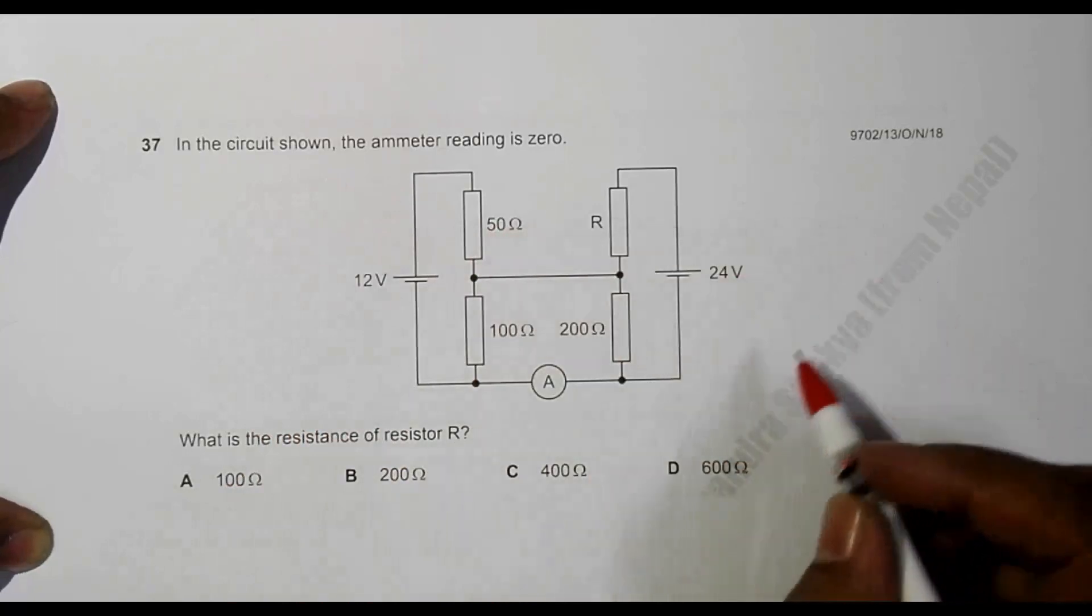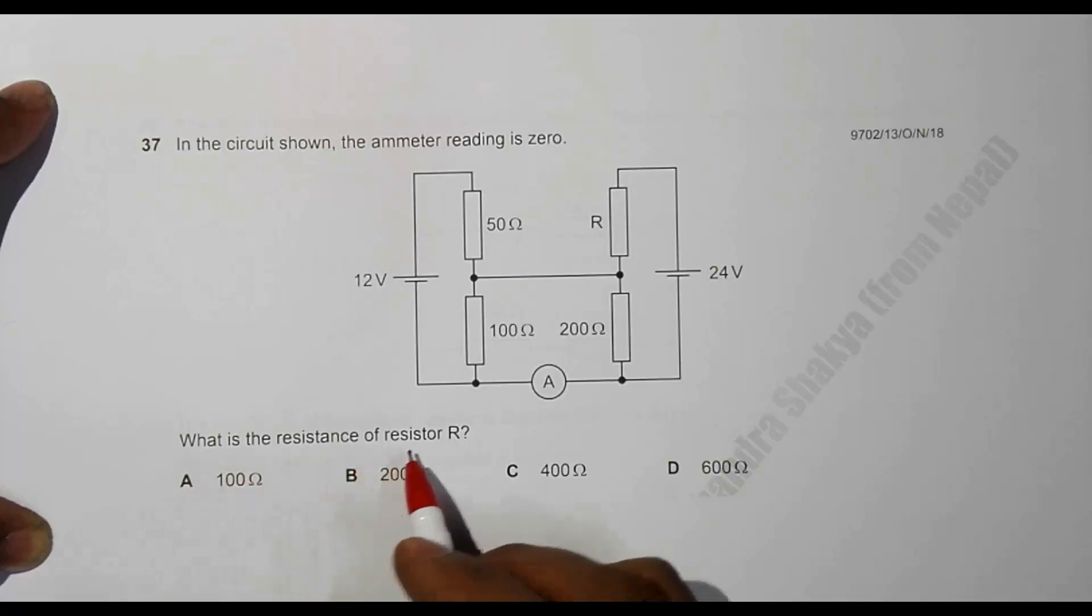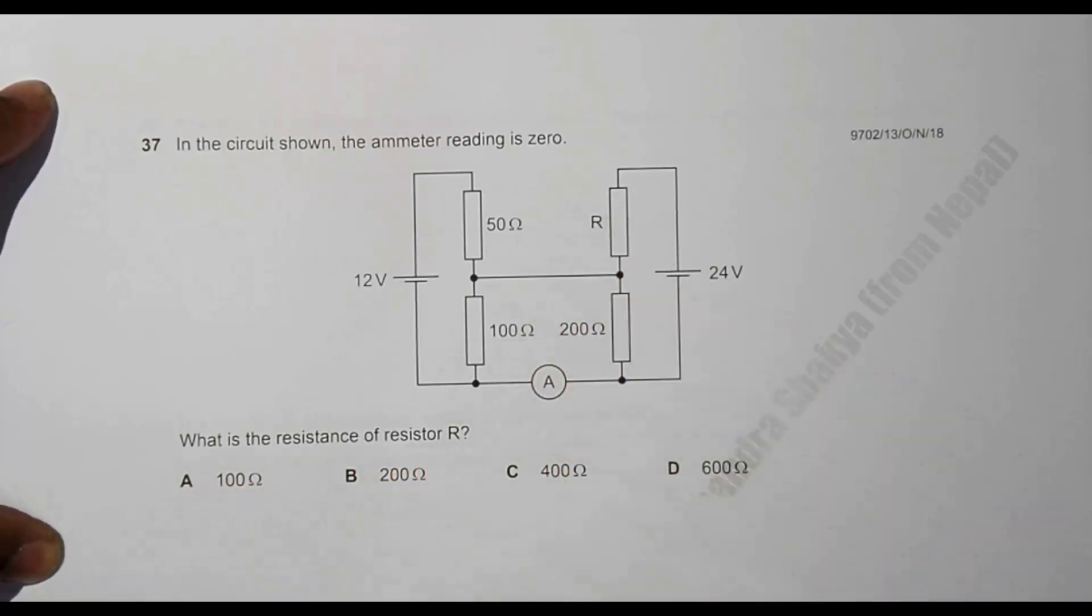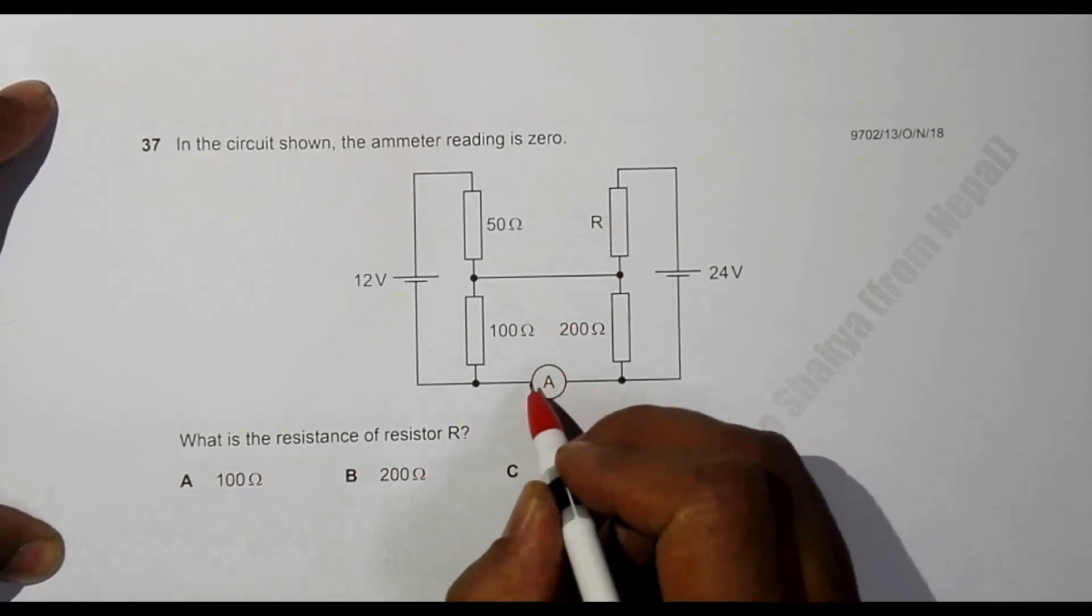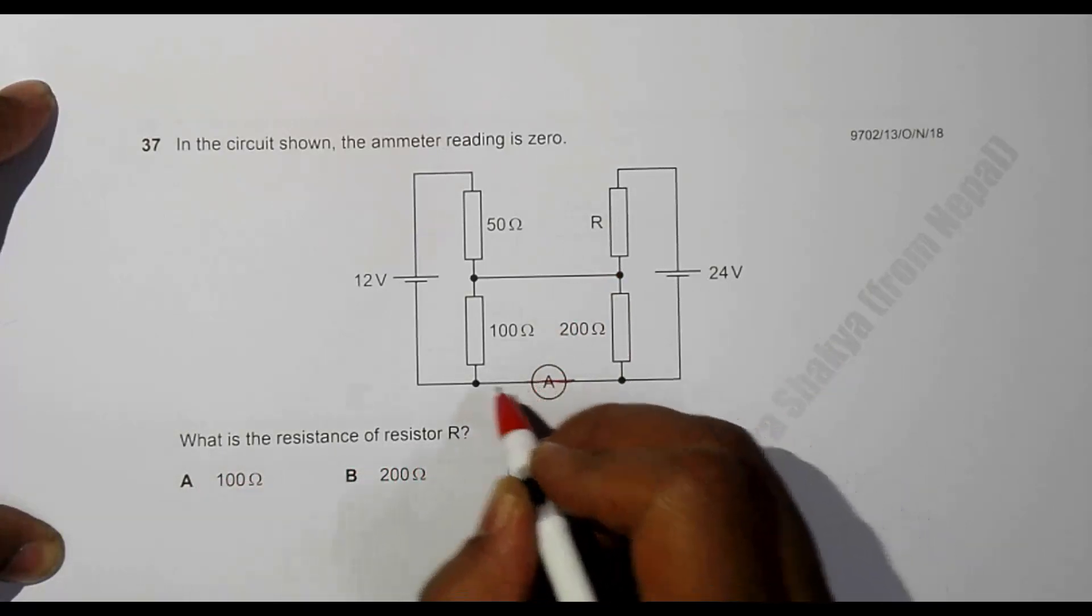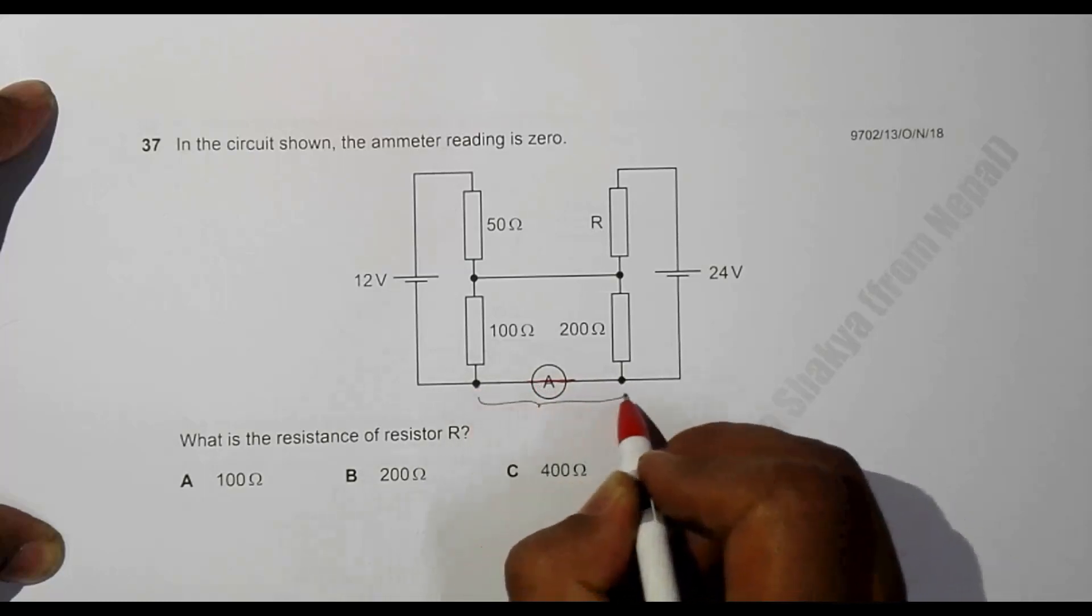In the circuit shown, the ammeter reading is zero, so we have to find what is the resistance of resistor R. Since the ammeter reading is zero, it is like this is a short circuit.